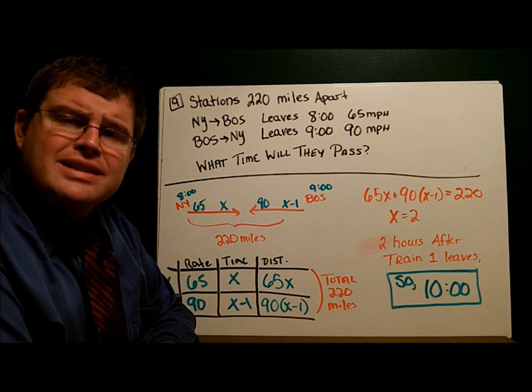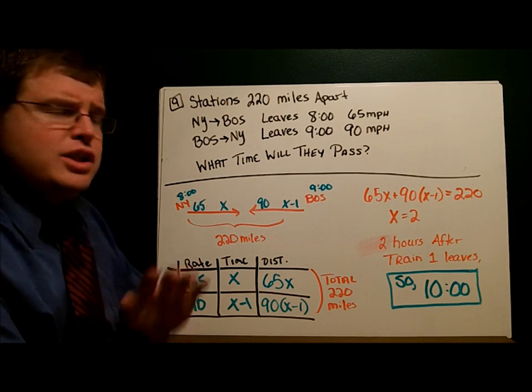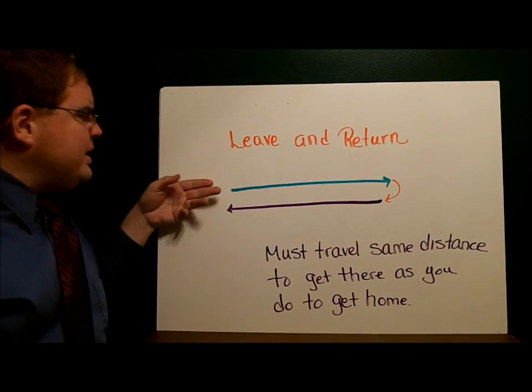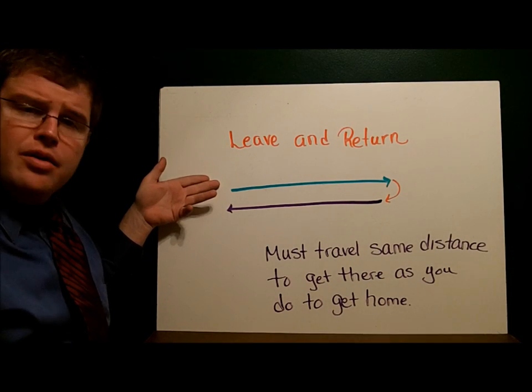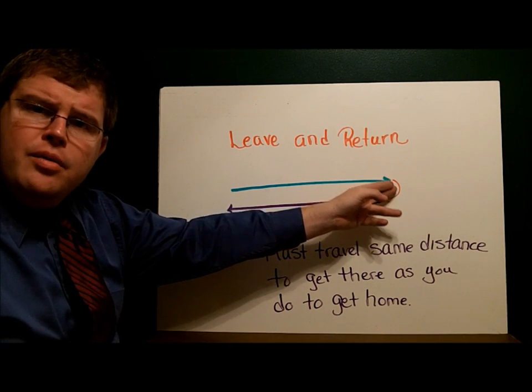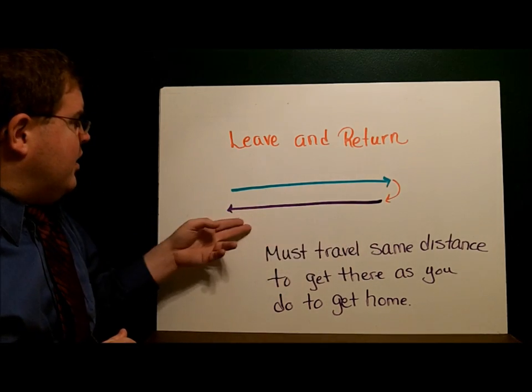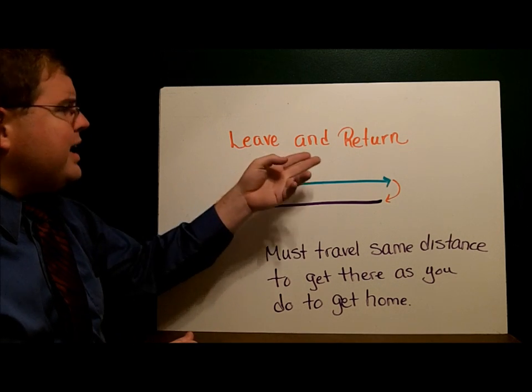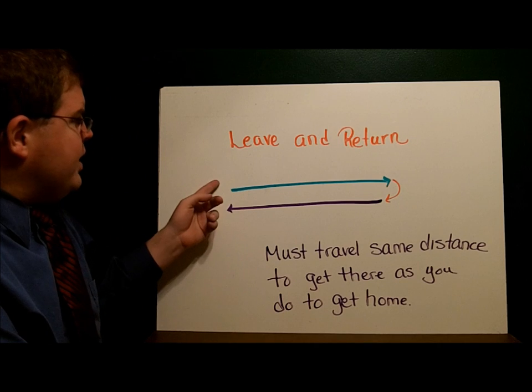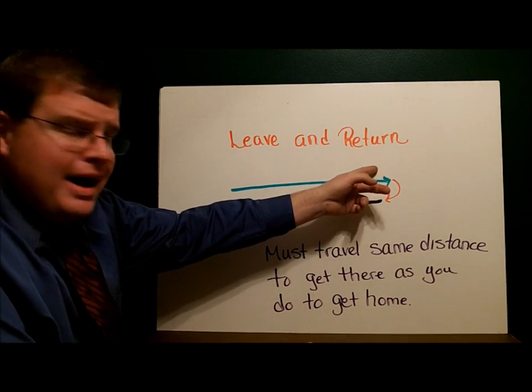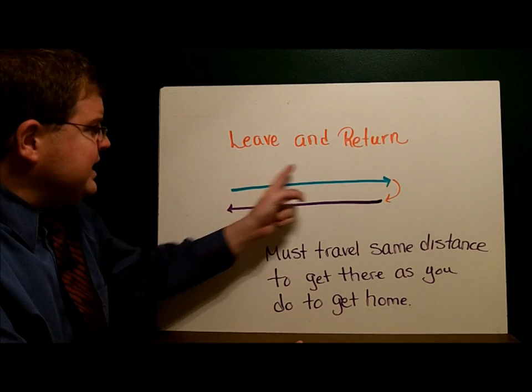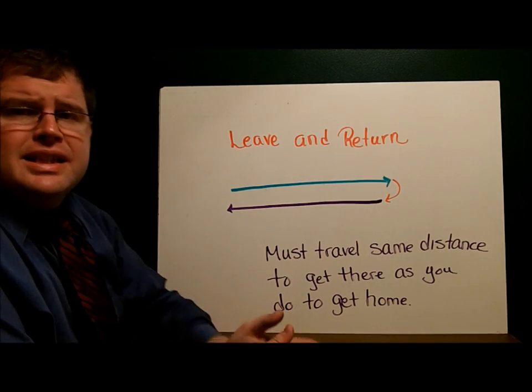Now one last type of problem. These are pretty interesting and a little bit different. Let's say we start at home and drive off to Wegmans, then turn around and come back home. We're looking at problems where we leave and then return. We travel out, say 10 miles, then have to travel 10 miles to get home. So this distance will equal this distance.